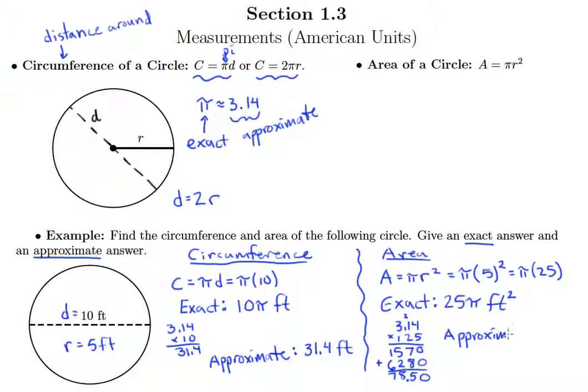And so our approximate answer, where we actually put in 3.14 and get a numerical answer, is 78.5, and that's going to be square feet as well.